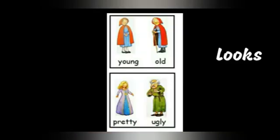Look at the picture. Young, old, pretty, ugly — we can say these describing words by looking at a person. Look at this example: She is a tall girl. Here, tall is a word that describes a person's height.